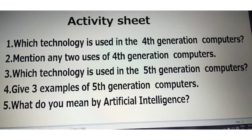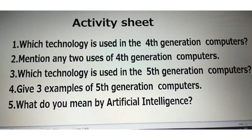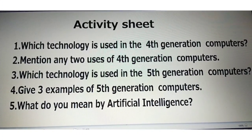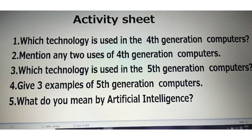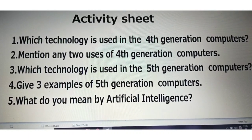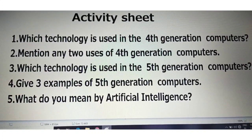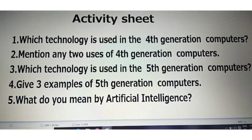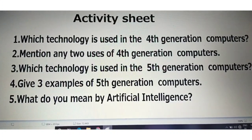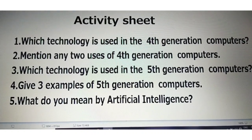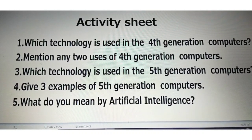Here is your activity sheet. There are five questions for you. Question one: Which technology is used in fourth generation computers? Question two: Mention any two uses of fourth generation computers. Question three: Which technology is used in fifth generation computers? Question four: Give three examples of fifth generation computers. Question five: What do you mean by artificial intelligence? After watching the video, you have to complete this activity sheet. We will meet in the next class. Bye bye.